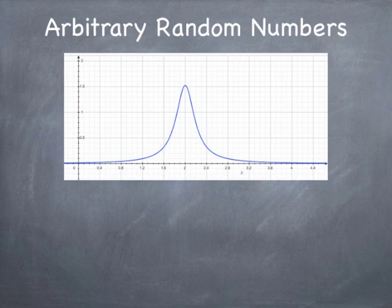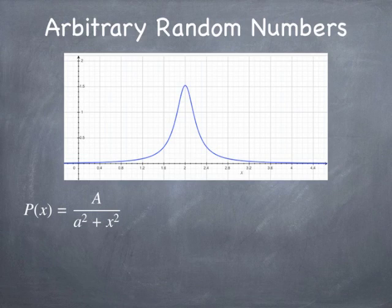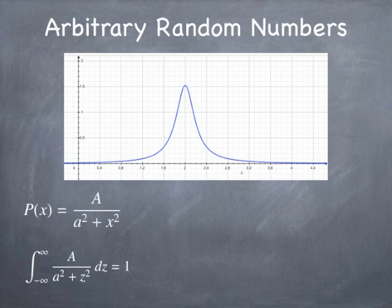Here's an example of a distribution called a Lorentzian. I just sort of pulled it out of the air as an example. There are literally zillions of different possible distributions you could imagine. Basically, any mathematical function that you could normalize could be used as a distribution function for random numbers. One thing we have to do is normalize it, so we have to figure out what this normalization constant A is. We can use our favorite symbolic algebra package to do that.